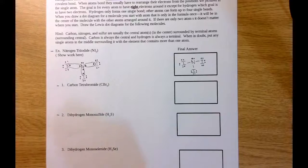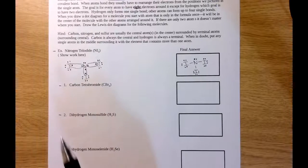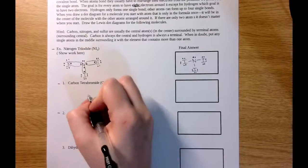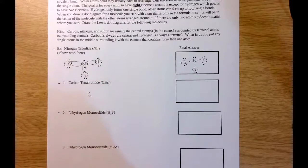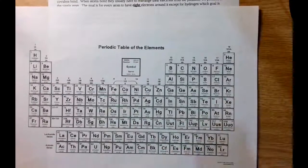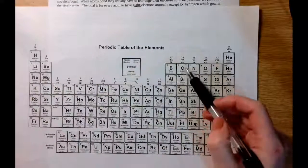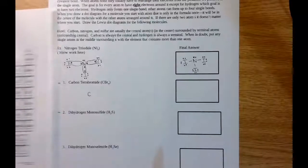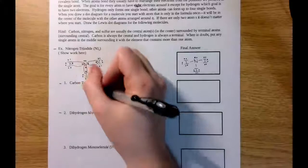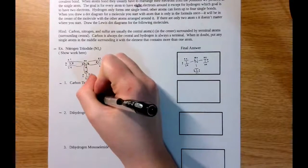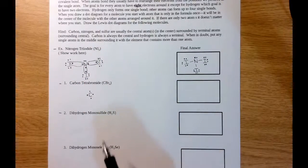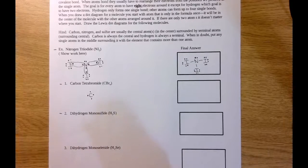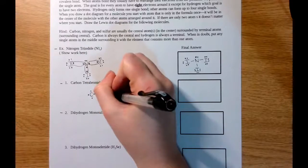Moving on to carbon tetrabromide. We know that carbon, nitrogen, and sulfur are always our central atoms, so we'll start with carbon in the middle. Carbon has four valence electrons due to its position on the periodic table — it's in group 4A. We draw four valence electrons for carbon, and the subscript tells us we have four bromine atoms, so we draw those in around the carbon.